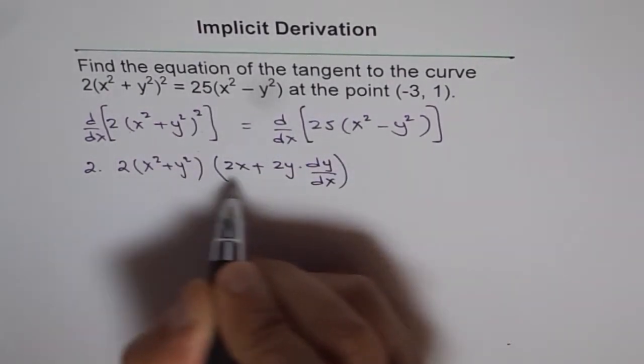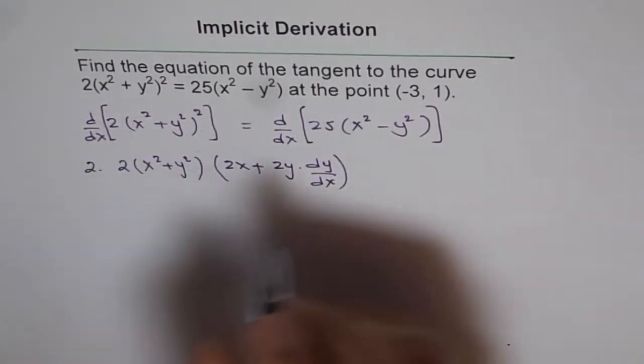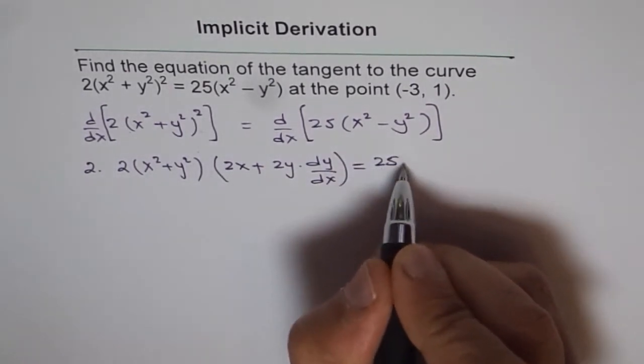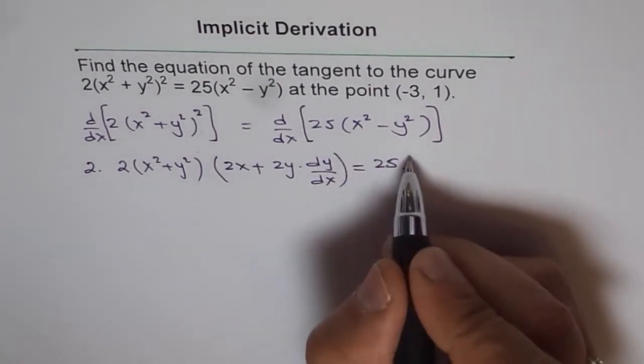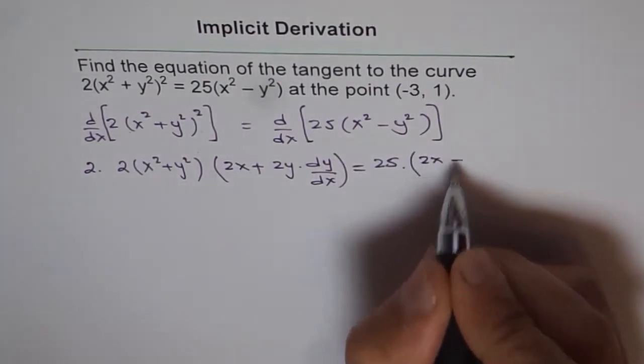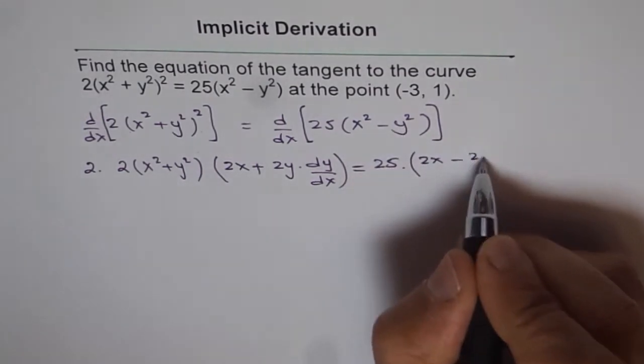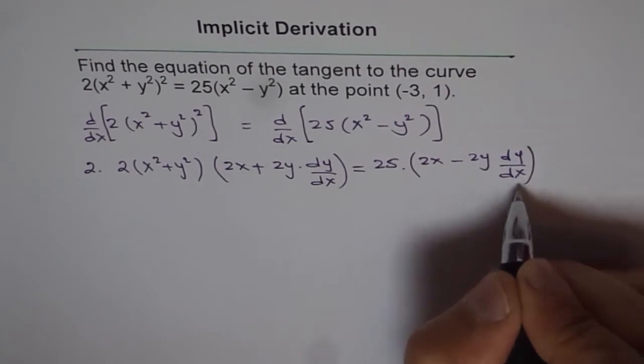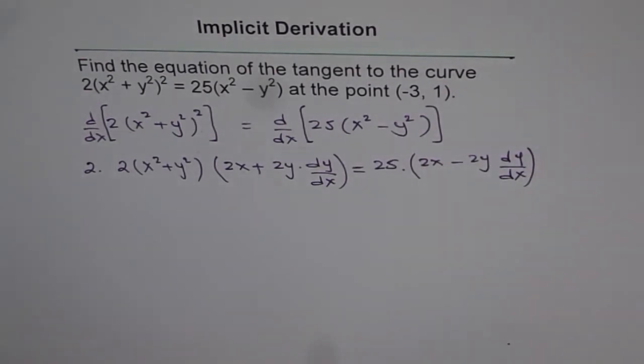That's the derivative on the left side. On the right side, we have 25 as a constant, so we'll take it out, and the derivative of this term is 2x minus 2y dy/dx. So that becomes the derivative of the function.